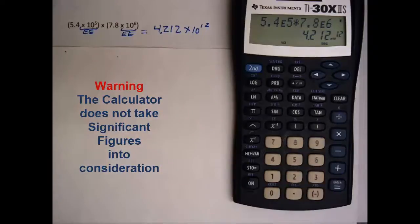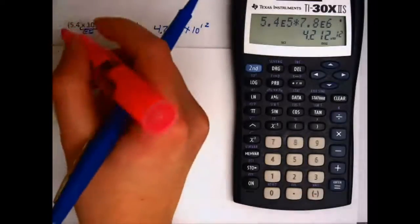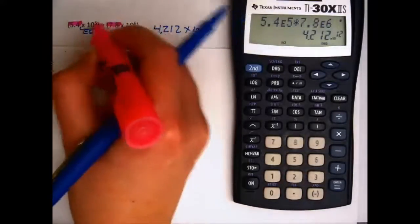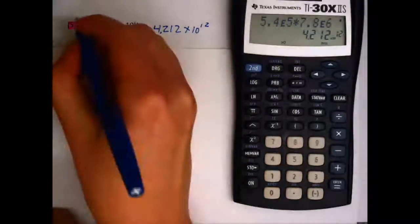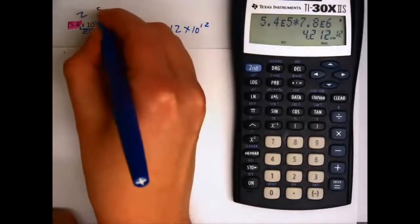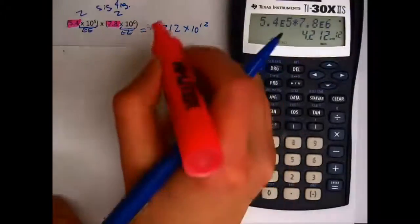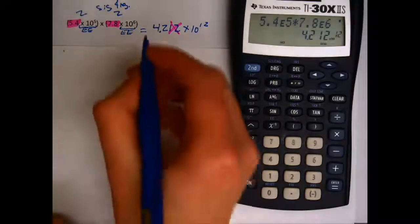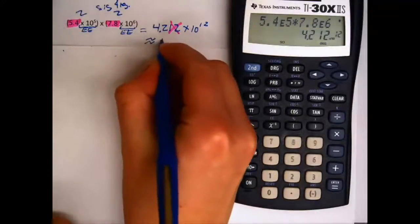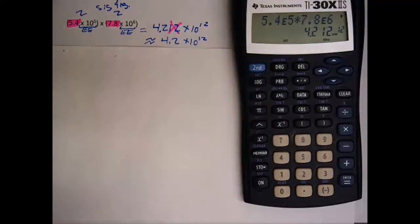Now one thing the calculator does not do for us is it does not take into account significant digits. So significant digits are how many, or how accurate our value was in the first place. Each of these have two significant figures. So actually, our final answer should have no more than two significant figures. So we really want to round this off to 4.2 times 10 to the 12th if we're thinking about significant figures.